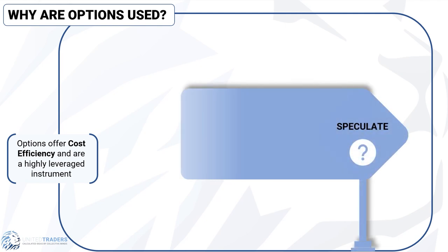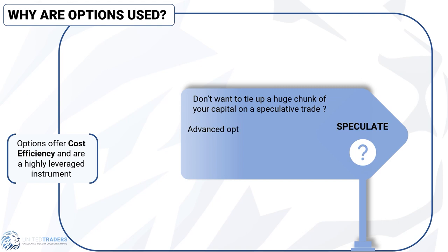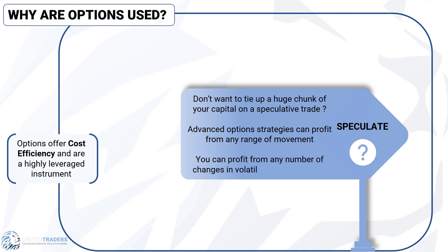Speculation. Sometimes trades are risky, and you don't want to tie up a huge chunk of your capital on a speculative trade. More advanced options strategies can profit from any range of movement. With options, you can profit from any number of changes in volatility, time, and price. Options simply give you a greater number of possibilities to trade in the markets.